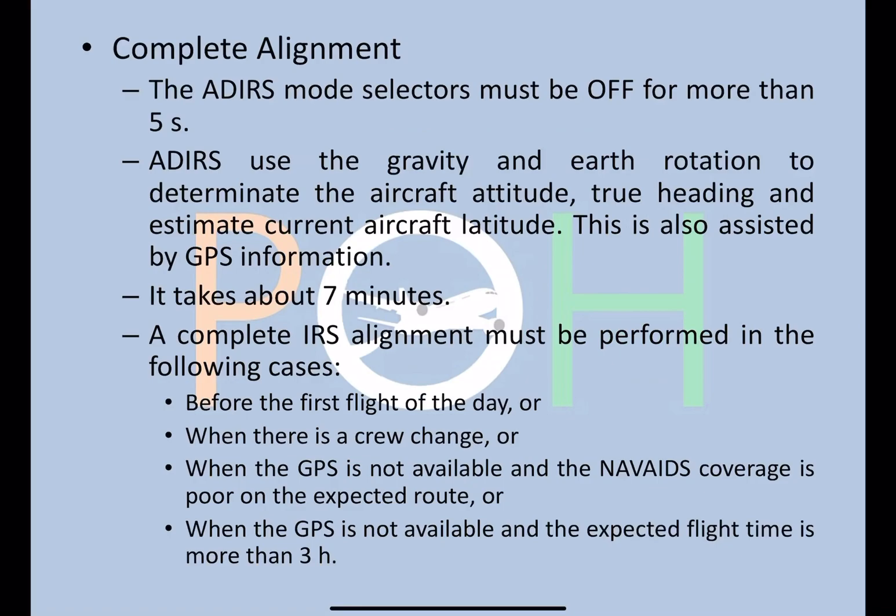Complete alignment must be performed in the following cases: before the first flight of the day, whenever there is a crew change, when GPS is not available and nav aid coverage along the expected route is poor, and when GPS is not available and the expected flight time is more than three hours. These last two conditions are very rare nowadays as GPS is available throughout most of the globe where aircraft operate.